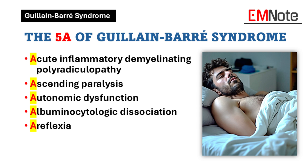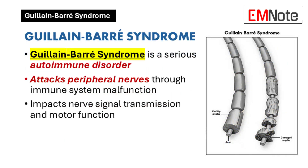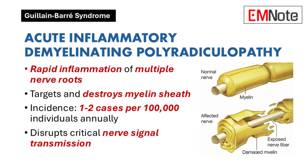The 5 A's of Guillain-Barré Syndrome: Acute Inflammatory Demyelinating Polyradiculopathy. Guillain-Barré Syndrome represents a critical autoimmune disorder characterized by a rapid inflammatory process targeting peripheral nerves. Healthcare providers must recognize this condition's primary mechanism of myelin sheath destruction. The syndrome impacts multiple nerve roots, disrupting critical nerve signal transmission. Epidemiological data reveals a consistent incidence of 1 to 2 cases per 100,000 individuals annually, underscoring its clinical significance.